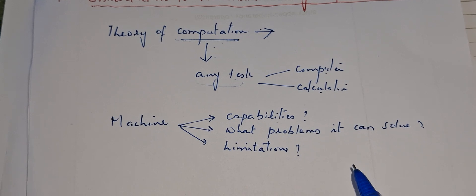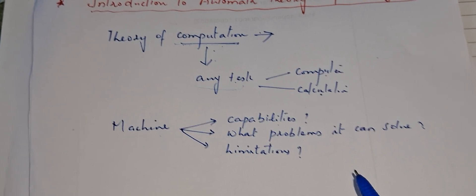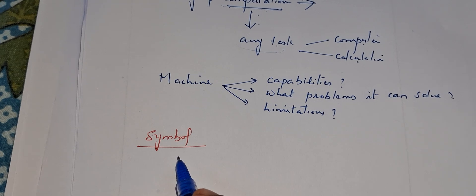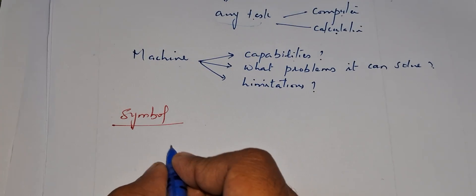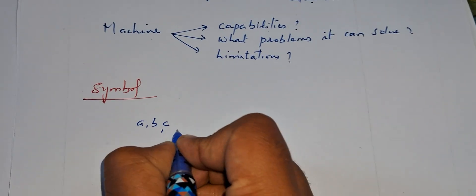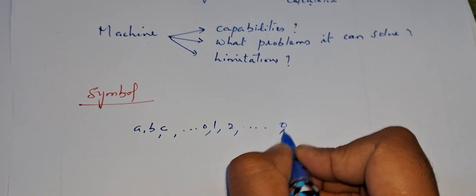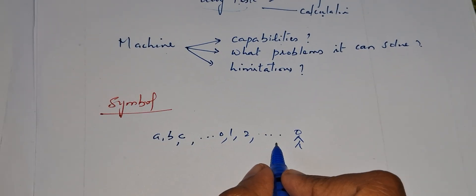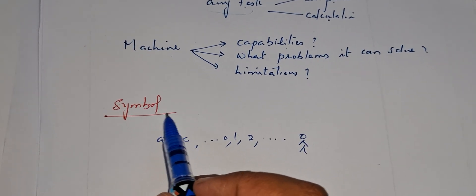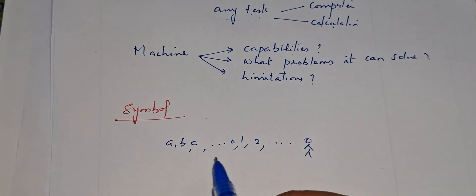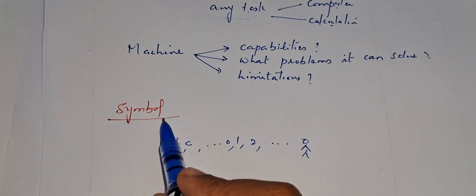Before going to study this particular subject, you need to know some basic concepts. The first is: what is a symbol? A symbol is the basic building block — that is any letter, any digit, or anything. Even a picture can also be considered as a symbol.